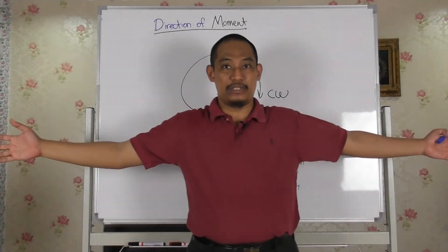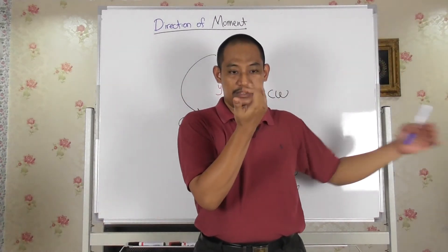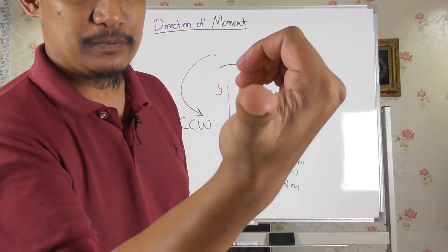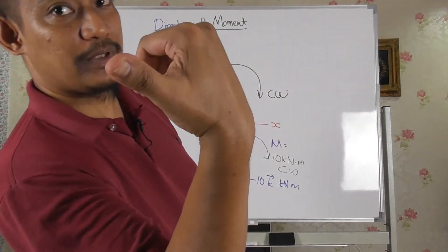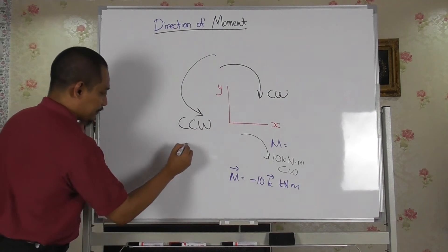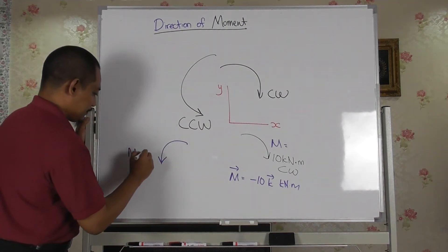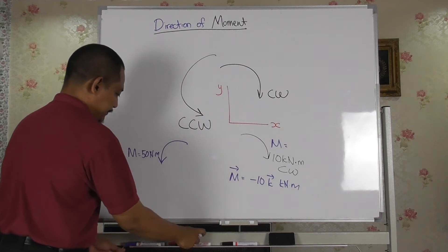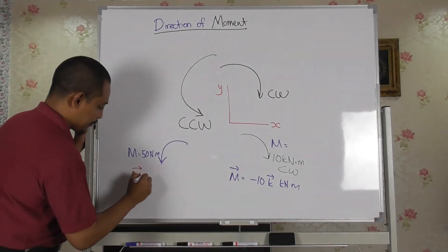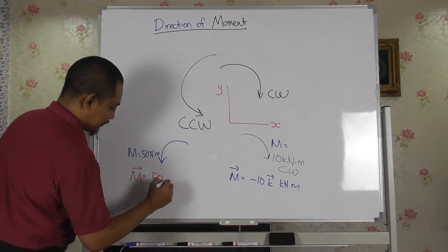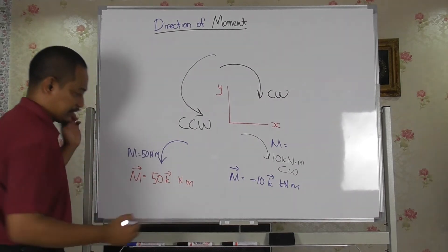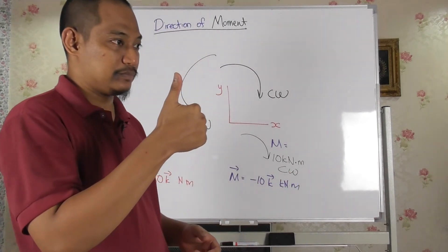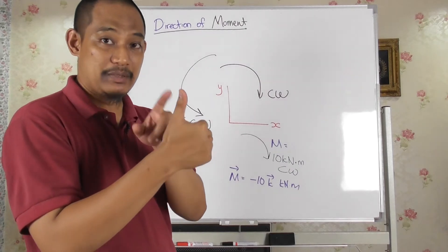If my rotation is counterclockwise, all the fingers are rotating the other way, so the right-hand thumb is going towards you — out of the whiteboard — to produce counterclockwise rotation. So when you have counterclockwise rotation, let's say M is 50 newton meter, then in terms of vector, the moment vector equals positive 50K newton meter. Because in 3D space, the direction is described based on your thumb.